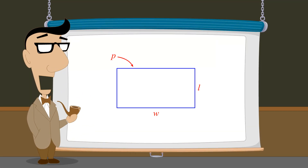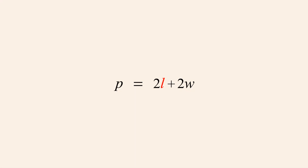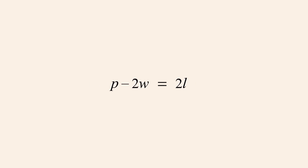Another example is to rearrange the formula for calculating the perimeter P of a rectangle given its length and width, to create a formula for calculating the length L given the perimeter and width. Just as before, we want to rearrange the formula so that the variable whose value we are calculating is alone on the left side. We start by subtracting the term 2W from both sides of the equation.